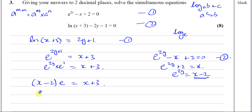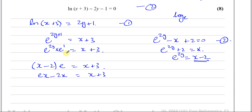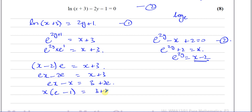Expanding the bracket: EX minus 2E equals X plus 3. I can bring the X terms to one side: EX minus X equals 3 plus 2E. Taking X as a common factor: X times (E minus 1) equals 3 plus 2E. So X equals (3 plus 2E) over (E minus 1). That is something I can find the value of X from.